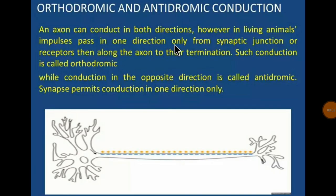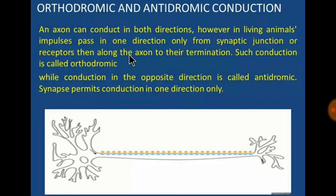An axon can conduct in both directions; however, in living animals, impulses pass in one direction only — from the synaptic junction or receptor along the axon to their terminal. This is called orthodromic conduction, while conduction in the opposite direction is called antidromic conduction. Orthodromic conduction is the normal direction of conduction, from the cell body or site onwards toward the axon terminal.